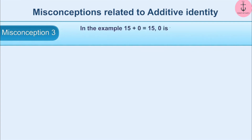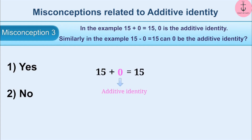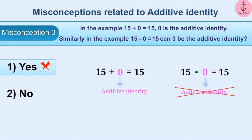Misconception 3: For the example 15 plus 0 equals 15, 0 is the additive identity. But will 0 also be the additive identity for 15 minus 0 equals 15? By adding 0 to 15, the result is the same number 15, so 0 is called the additive identity. However, in 15 minus 0 equals 15, when 0 is subtracted from 15 the result is the same number — this leads some to also consider 0 as additive identity here. This is incorrect. The correct understanding is that additive identity is related to addition only, not subtraction. Therefore, the correct answer is no.